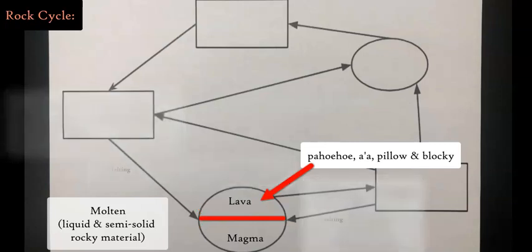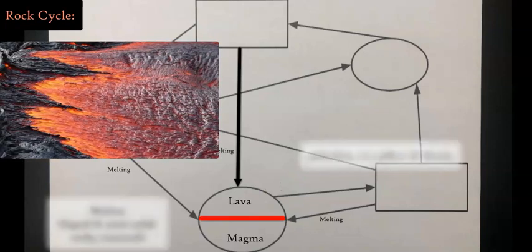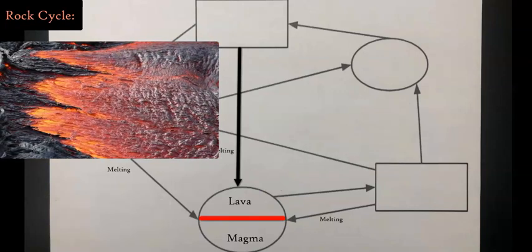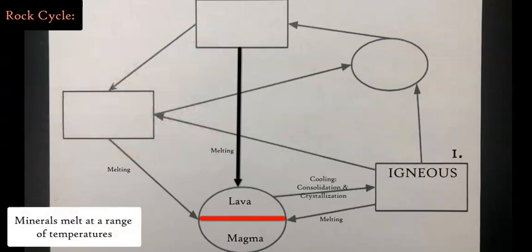You can add in a new arrow, a new process right here. Any line that is going to lava and magma, this oval shape, is going to be melting as a process. You can discuss the difference in melting at certain temperatures with certain minerals.